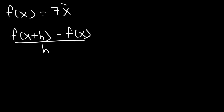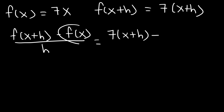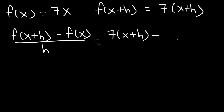Let's say we have a function f of x equal to 7x. We already have f of x is 7x. To find f of x plus h, all you have to do is replace x with x plus h, so it's 7 times x plus h. This expression becomes 7 times the quantity x plus h, minus f of x which is 7x, divided by h.